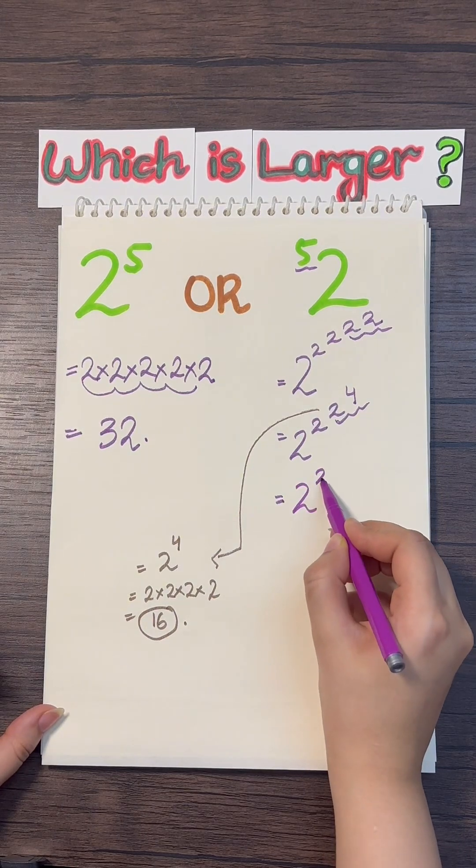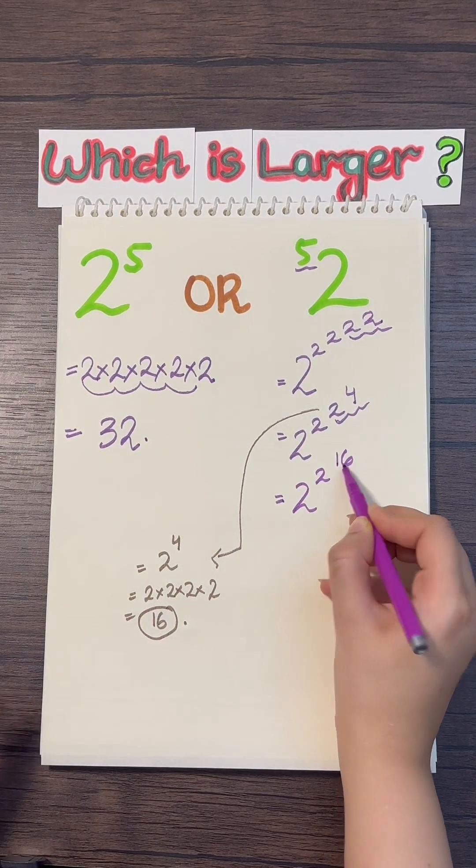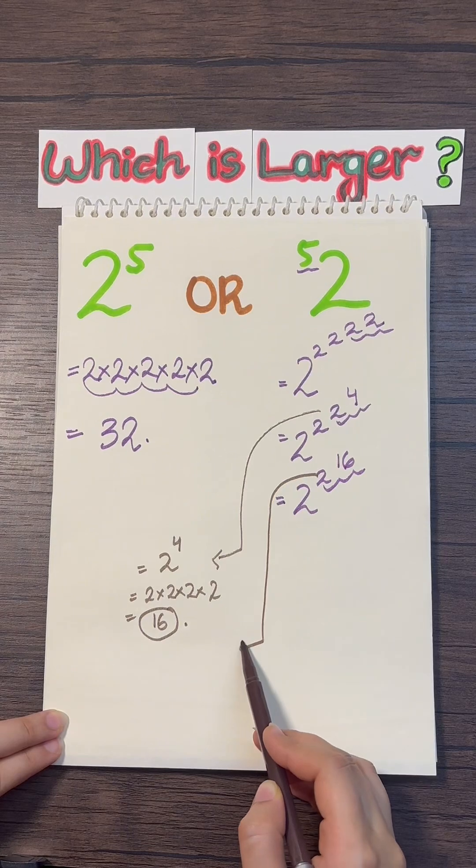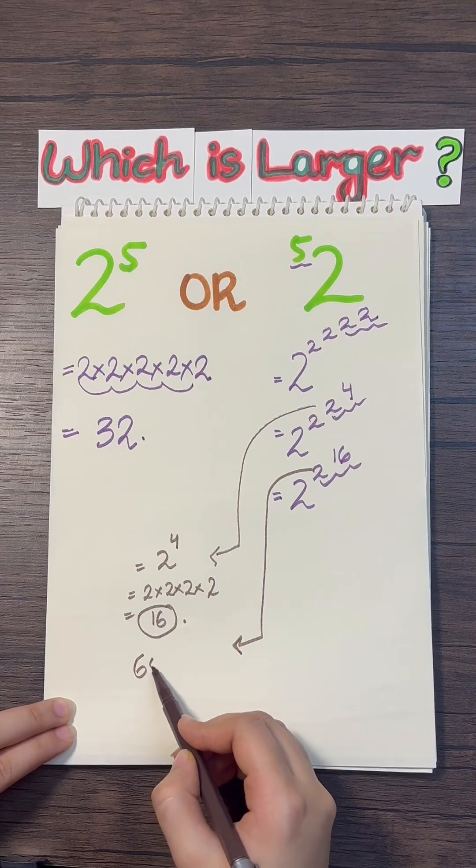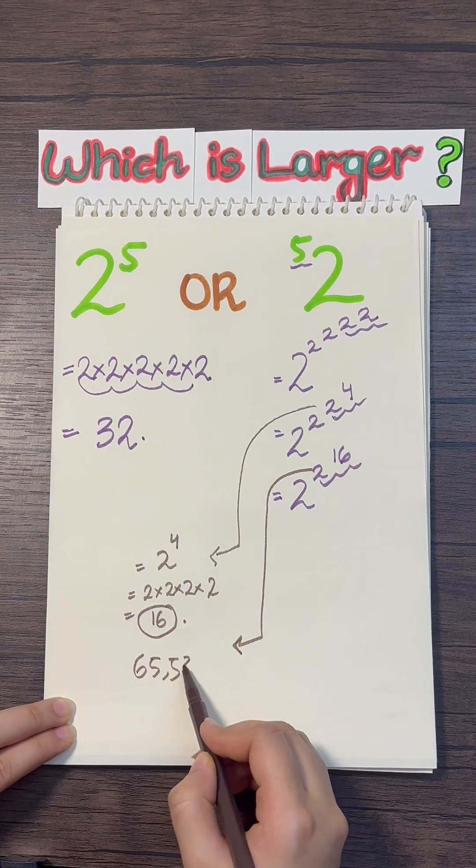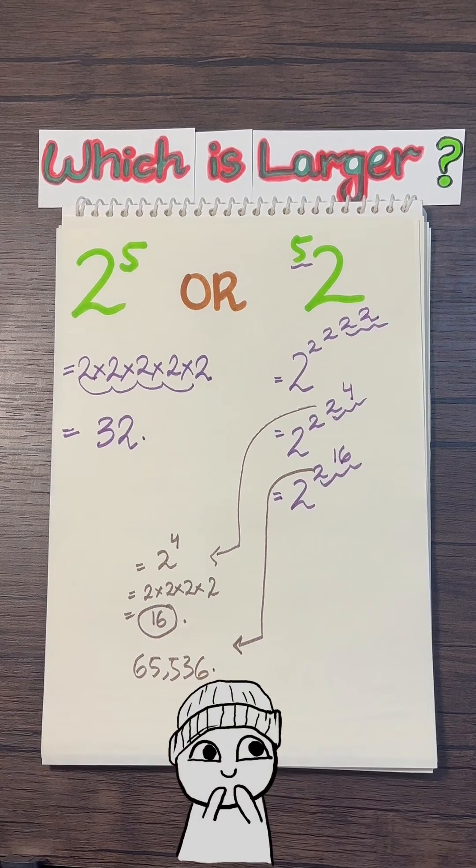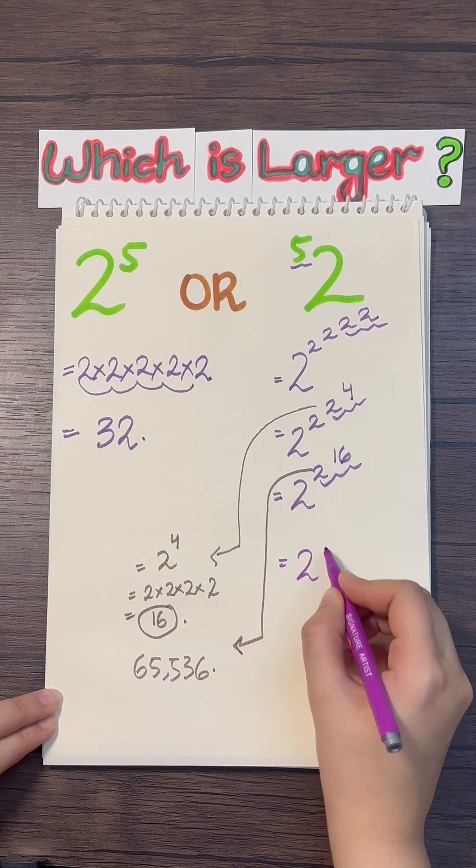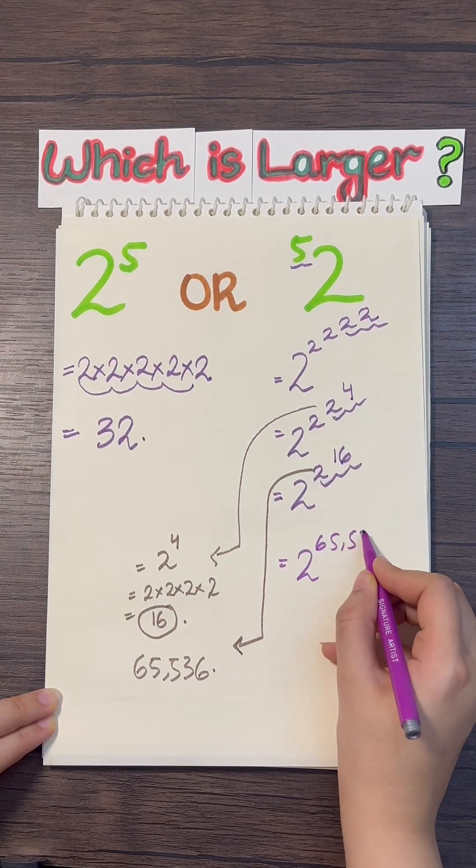So it becomes 2 raised to the power 2, raised to the power 16. What does this equal to? 2 to the power of 16 equals 65,536. I have done it on calculator. And now it becomes 2 raised to the 65,536.